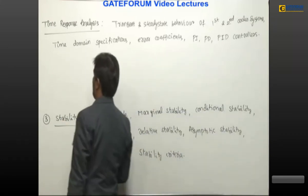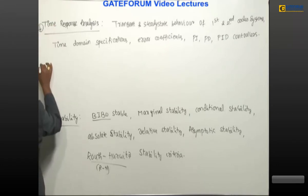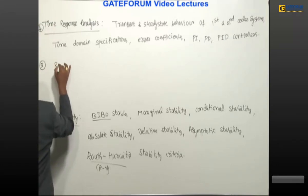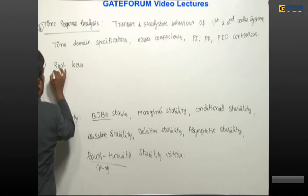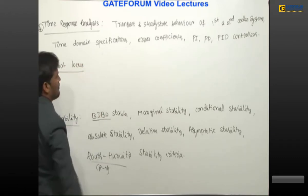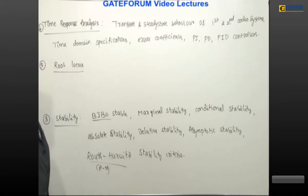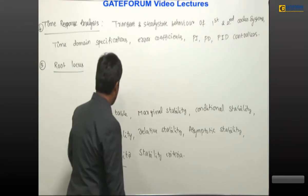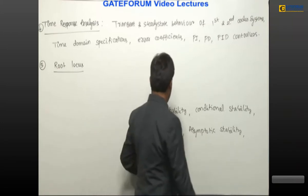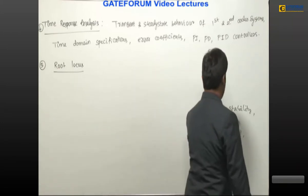The fifth topic is root locus. In this we have 11 rules — how to construct the root locus and how to determine stability from that. Topic number six is frequency response analysis.